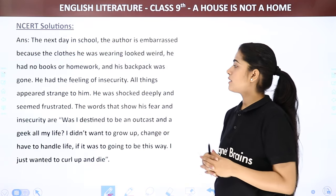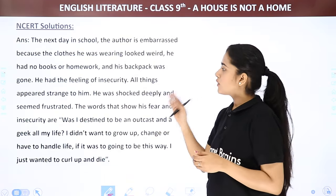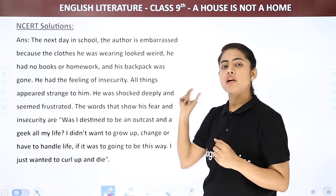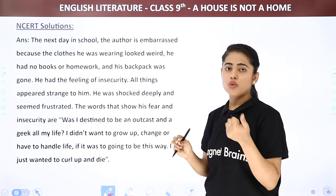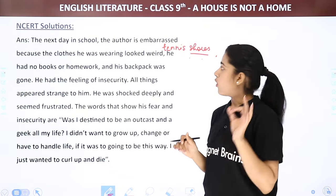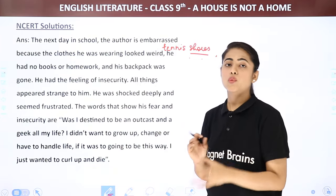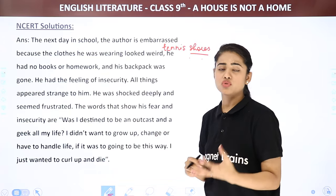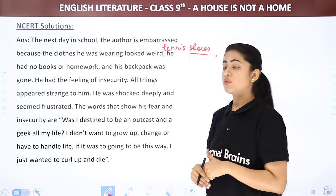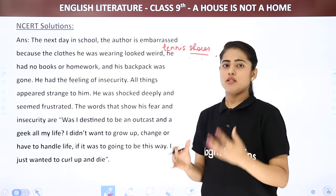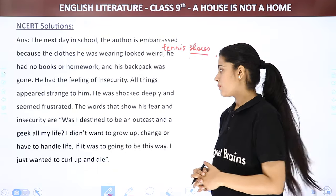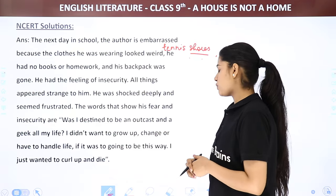So the answer is: The next day in school, the author is embarrassed because the clothes he was wearing looked weird. He was wearing tennis shoes, which was again very weird. He had no books, no homework, no backpack — his backpack was also completely burnt. He had the feeling of insecurity. All things appeared strange to him. He was shocked deeply and seemed frustrated. The words that show his fear and insecurity are: 'Was I destined to be an outcast and a geek all my life? I did not want to grow up, change, or have to handle life. If it was going to be this way, I just wanted to curl up and die.'